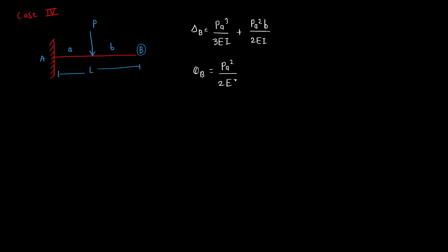That is Case 5. In this case now, the cantilever is subjected to a UDL (uniformly distributed load). The intensity of UDL is W, the length is L. This is a and B. So what is the value of slope and deflection at point B?